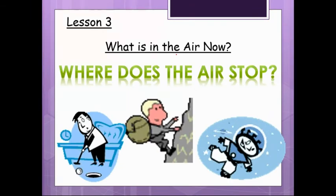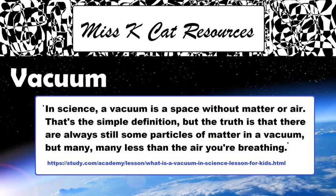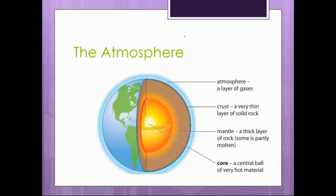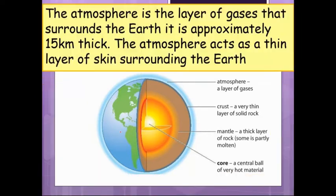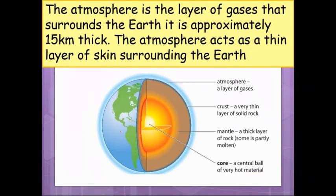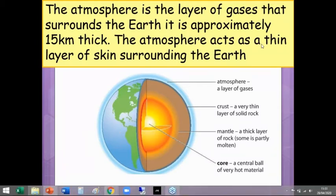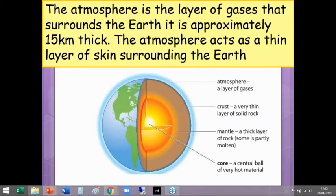But is there any air up in space? No - space is a vacuum. Here's an example of the structure of the Earth. The old specification required knowing the crust, mantle, and core, but that's not on the new spec - it's still in geography but not chemistry anymore. The atmosphere is a layer of gases that surrounds the Earth, approximately 15 kilometres thick. It keeps warmth in and keeps the oxygen in - really really useful.